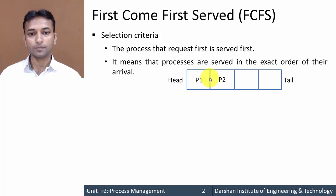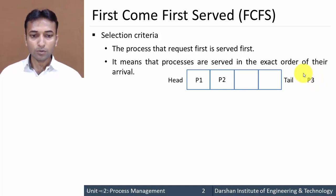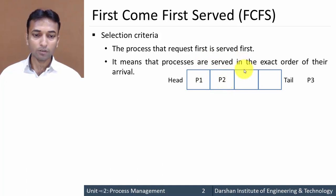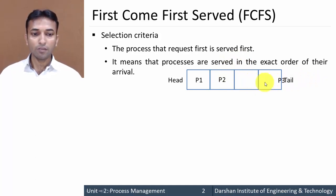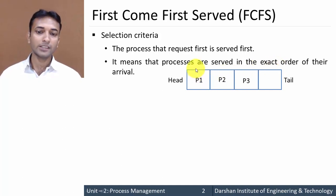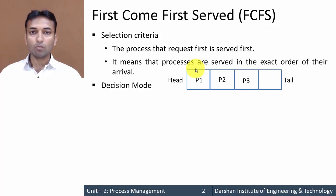Once the CPU becomes free, the processor is allocated to the process in the first slot, P1. Now suppose a new process P3 arrives. It checks whether the first slot is free — it's not. It checks the second slot — not free. It checks the third slot — it's free, so P3 places itself into the third slot. Whenever a new process arrives, it checks each slot starting from the head towards the tail.